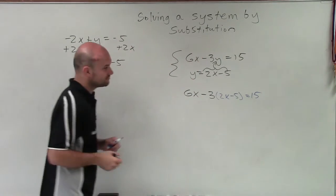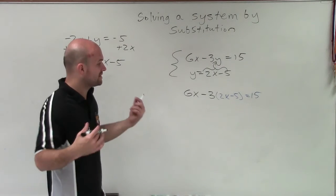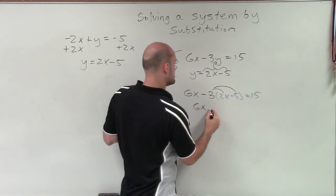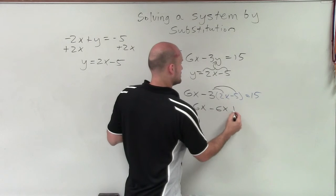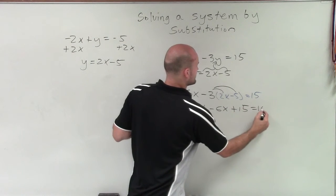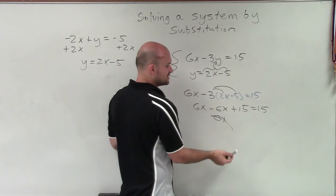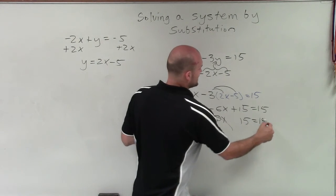So therefore, now by applying my distributive property, I get 6x minus 6x plus 15 equals 15. Well, 6x minus 6x is just going to be 0x, which is just 0. And then I have 15 equals 15.